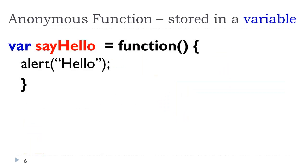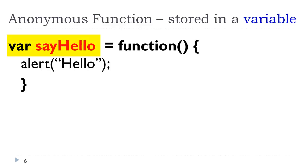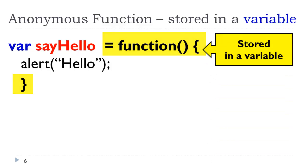Now we're going to look at another way of creating what is called an anonymous function. It's called anonymous because it's stored in a variable as opposed to being created using the function keyword, which we will see later on. So let's take a look at this code. 'var sayHello' — I have just declared a variable. I am storing a function in this variable, and the code inside the opening and closing curly braces that will be executed would be this alert. So we can store a function in a variable, and this is termed an anonymous function.